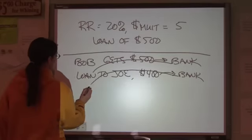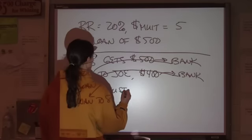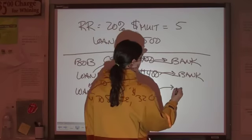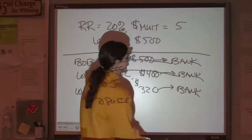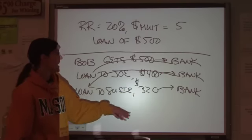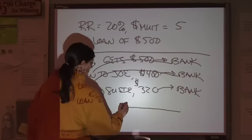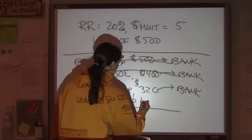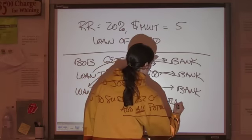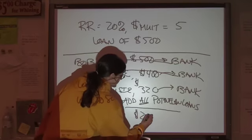Now, that bank can potentially loan out $320. So, now that bank makes a loan to Susie of $320. And she puts that in her bank. And if we kept going through this process until there's nothing left over, and we add up all those potential loans, that's where we get the $2,500 from.